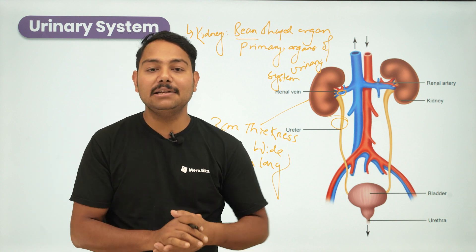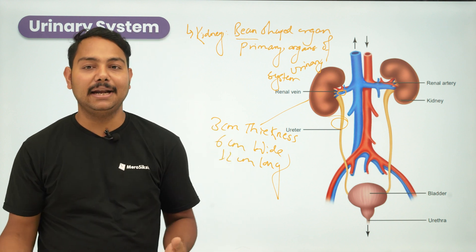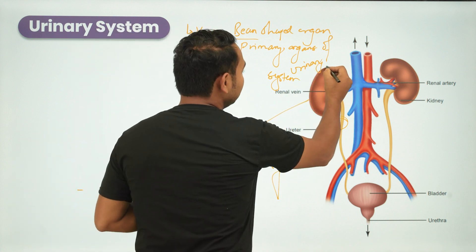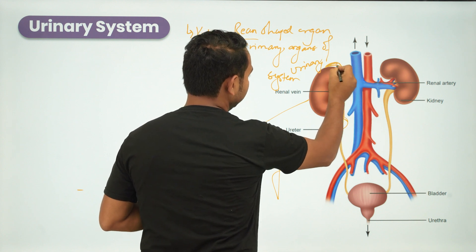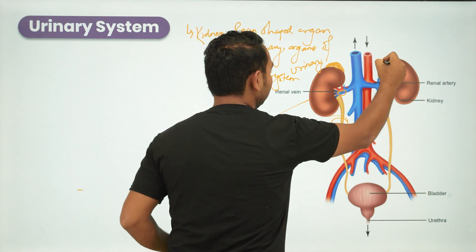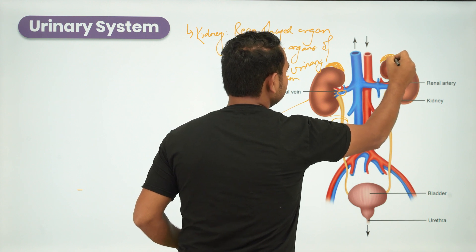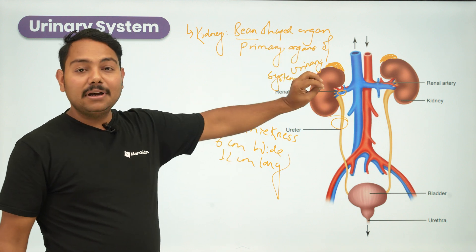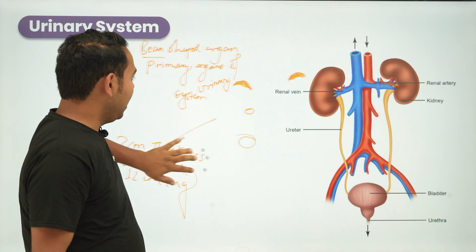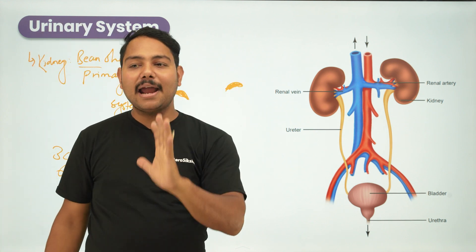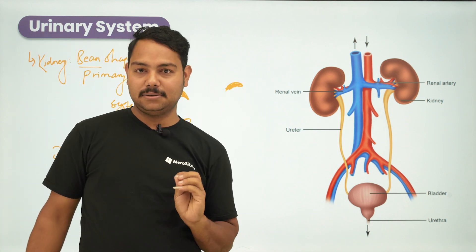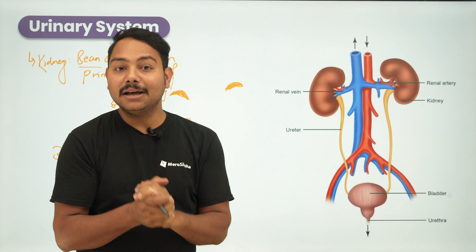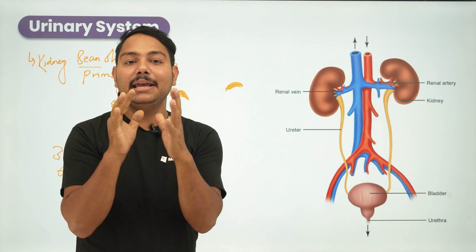The adrenal glands sit on the cap of both kidneys. The adrenal gland has two parts: an outer cortex and an inner medulla.